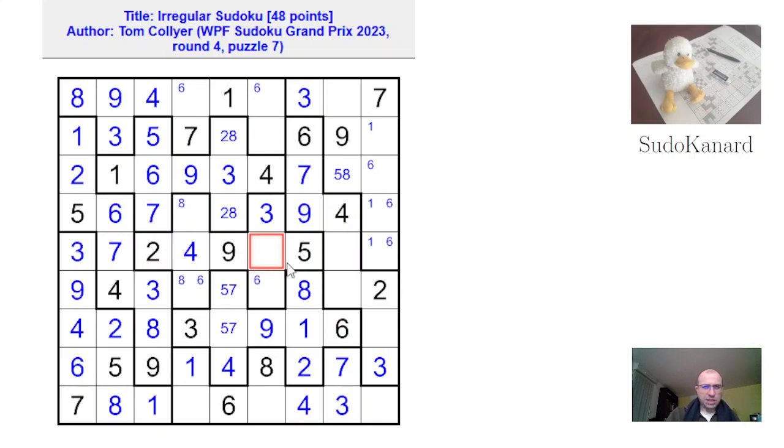This row still needs 1, 6, and 8. And that's not a 6. So that's a 1. 6 and 8 here. So that's 8. That's 6. And there I get this 5 and this 8.